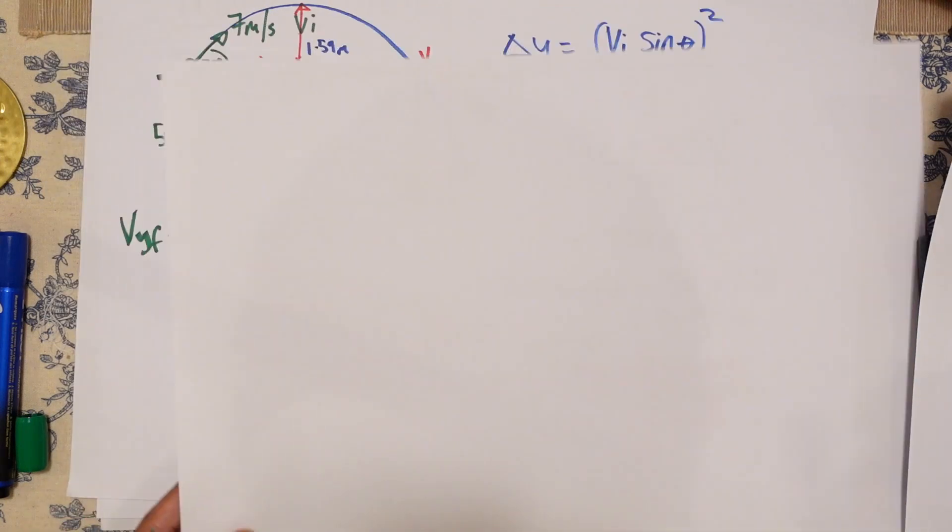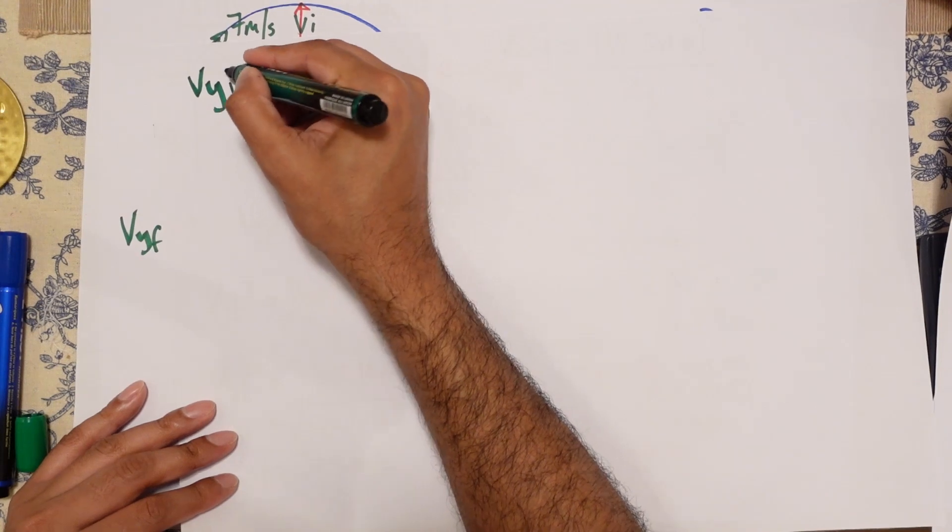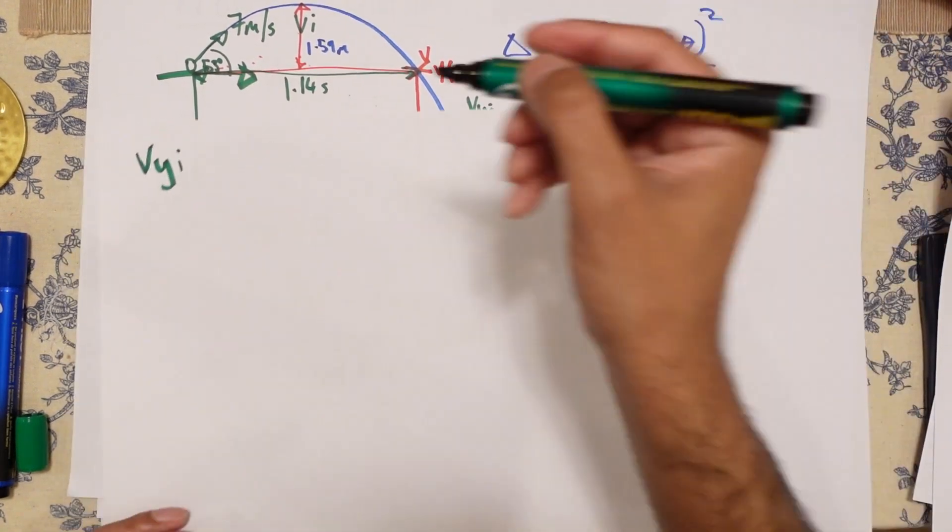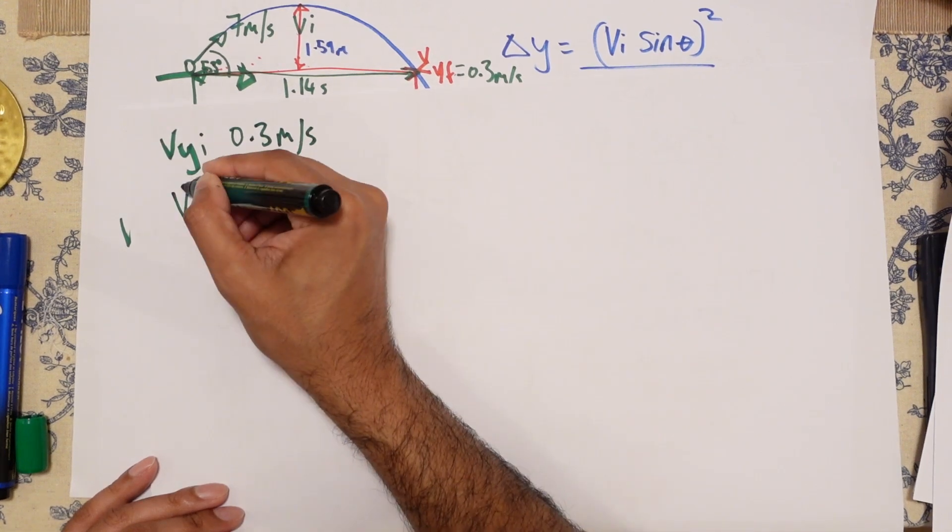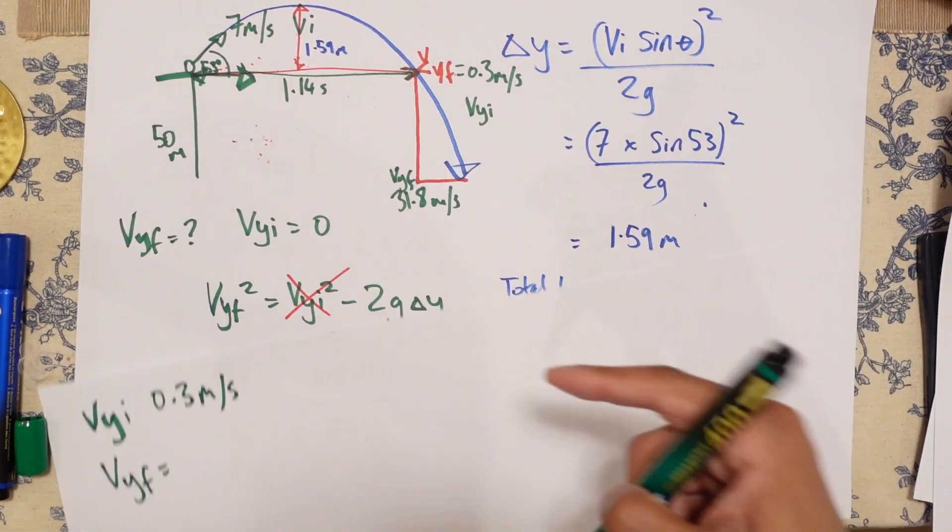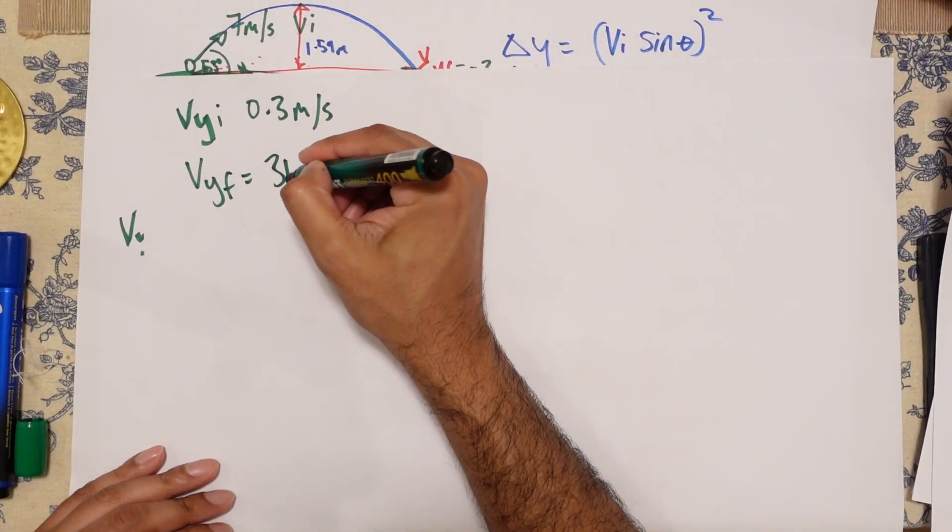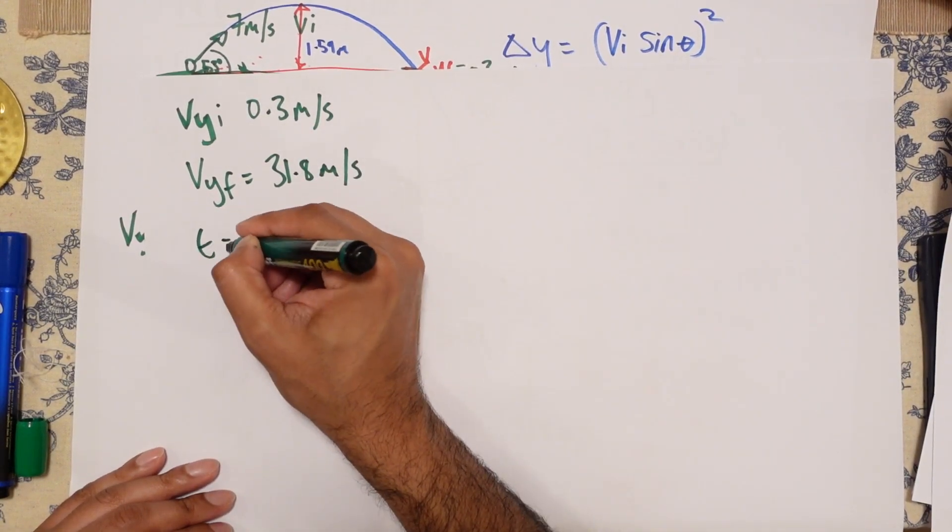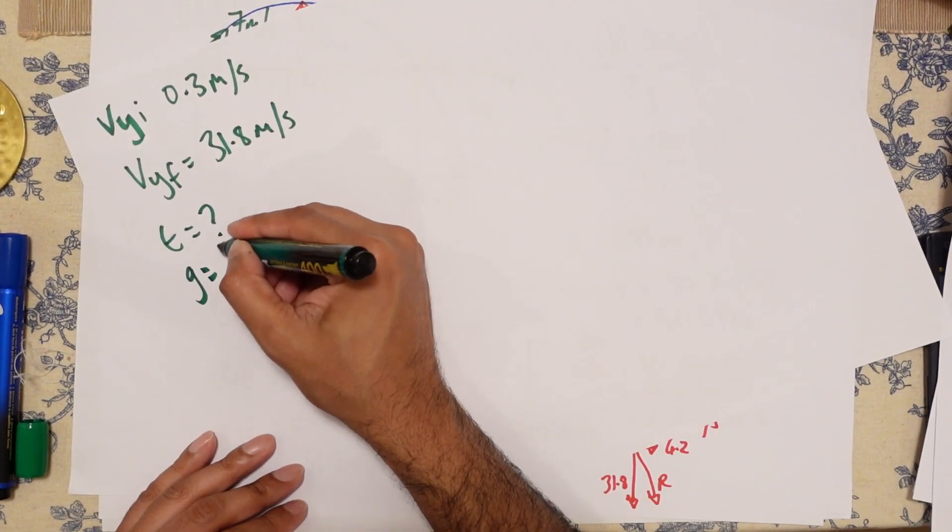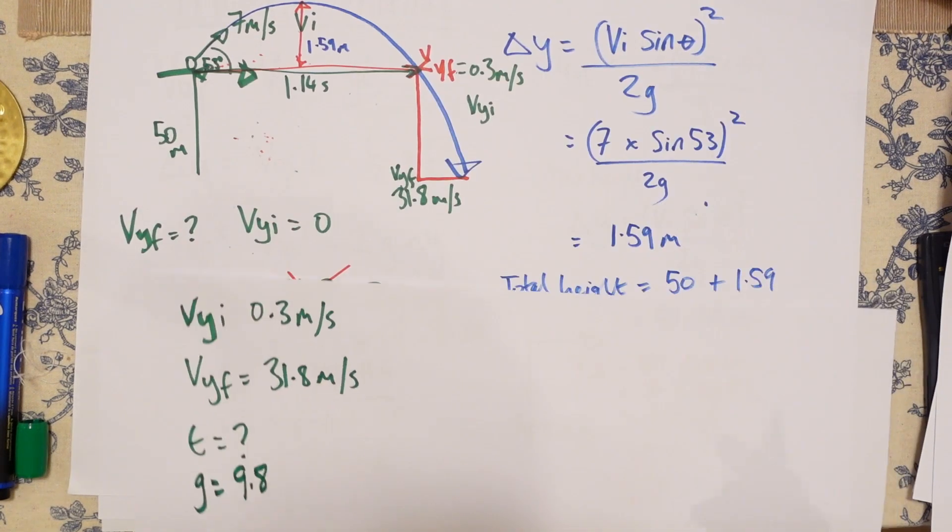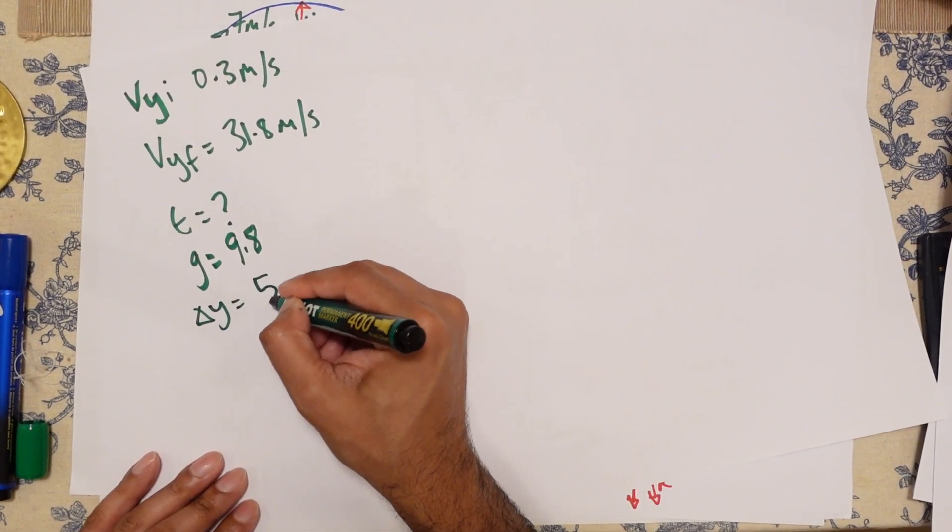So let's get a new bit of paper. Let's write it all out again. We know, first of all, the new VYI is 0.3 meters per second. We know that VYF, we worked it out as 31.8 meters per second. We don't know what T is. G is 9.8. And delta Y is 50 meters.